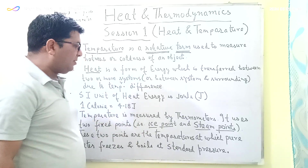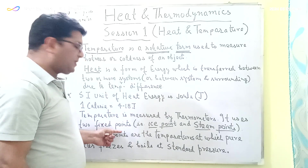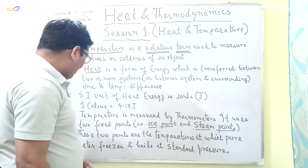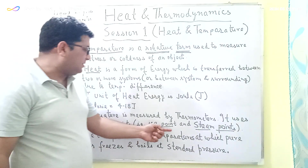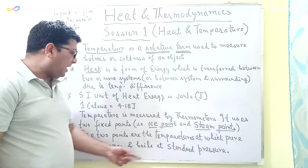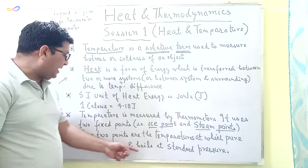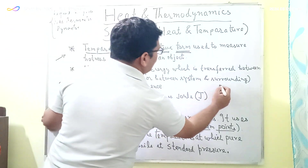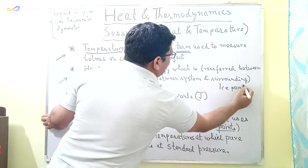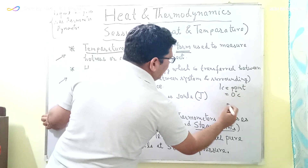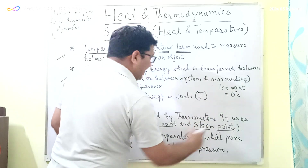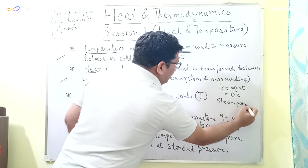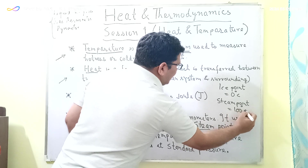When we construct thermometers we use two fixed points — the ice point and the steam point — for calibration. The ice point is the point at which pure water freezes at standard pressure, equal to 0 degrees centigrade. The steam point is the point at which pure water boils at standard pressure, equal to 100 degrees centigrade.